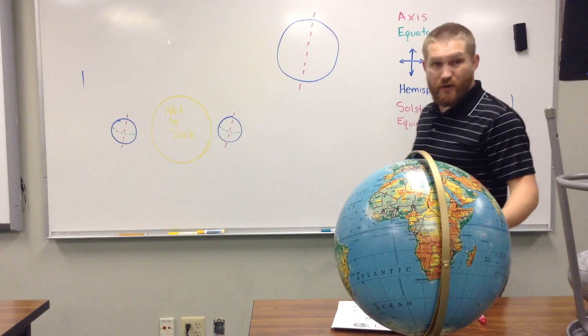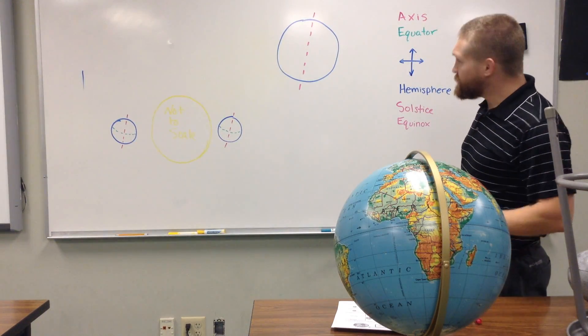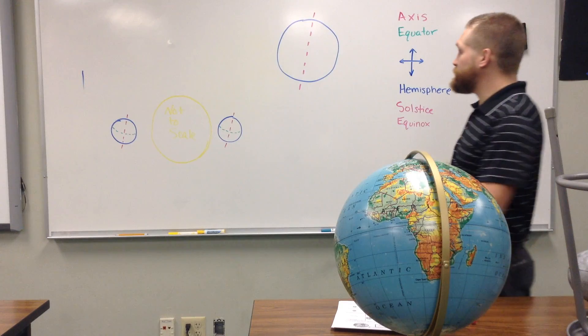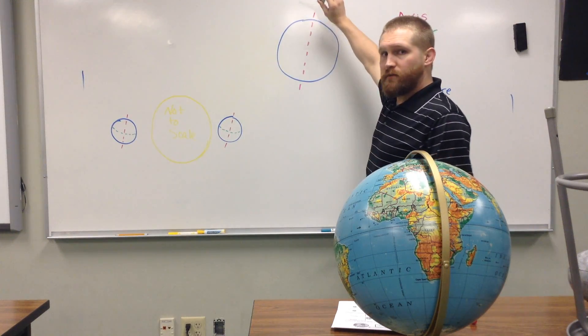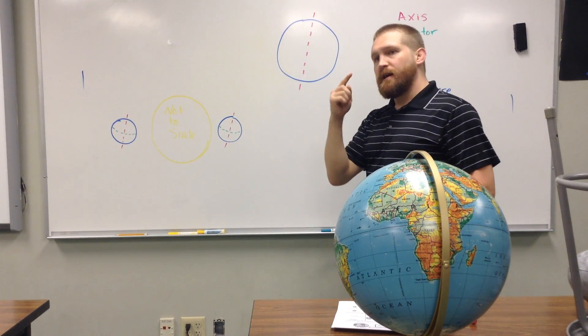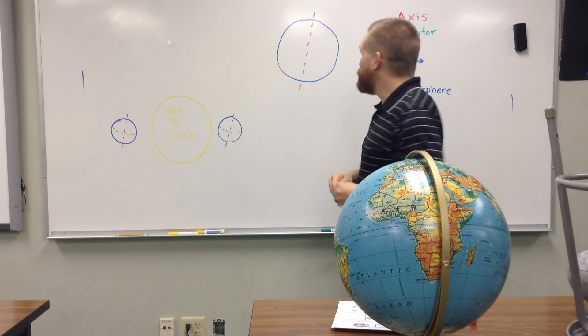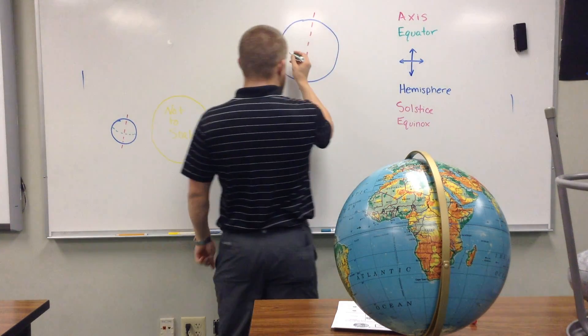Second thing we need to understand is the word equator. Most people are familiar with this one. Equator divides the northern part of our planet from the southern part of the planet. So, it's a line that goes all the way around the middle of our planet. I'm going to draw the equator in green.